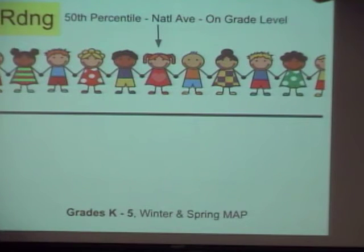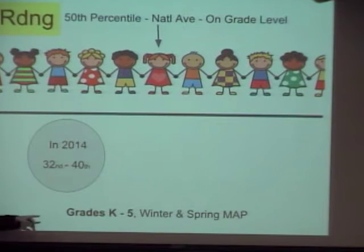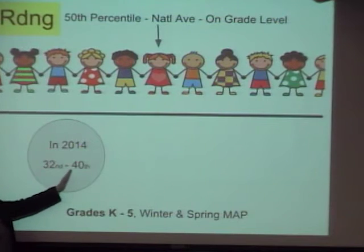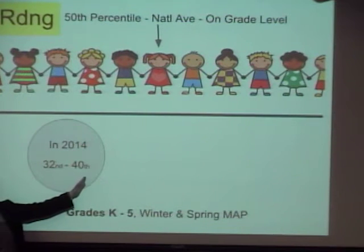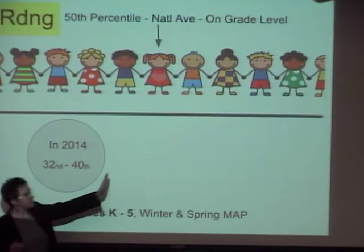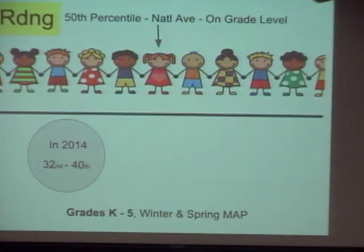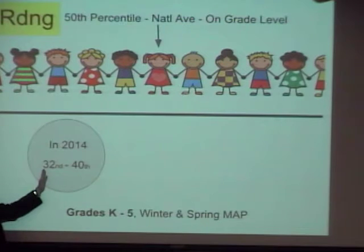First we're going to look at grades K through 5, looking at a combination of when we tested last winter and spring. Back in 2014, two years ago, when you look at our scores grades K through 5, our grade levels ranged from the 32nd percentile to the 40th percentile. So we were multiple grade levels behind — remember, 50th is right on grade level, and we were starting here. Our students in grades K through 5 were not on grade level, some at the 40th percentile and some at the 32nd.